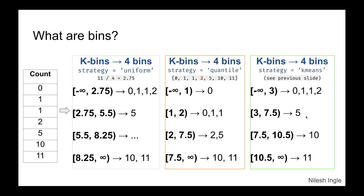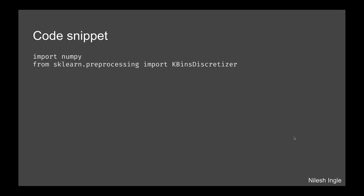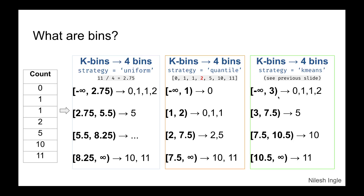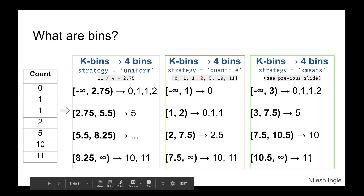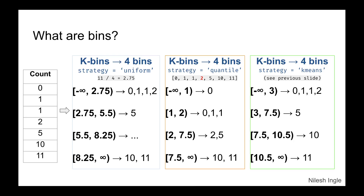Those are the final bin edges when using the k-means strategy. For example, the first bin runs from -∞ up to 3, the next from 3 up to 7.5 (not including 7.5), and so on. Those are the three main strategies available in KBins Discretization: uniform, quantile, and k-means.